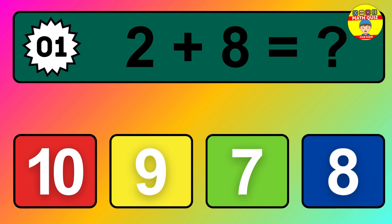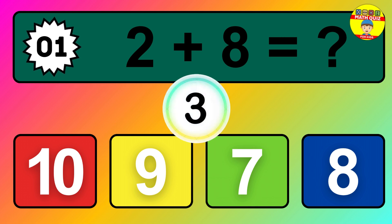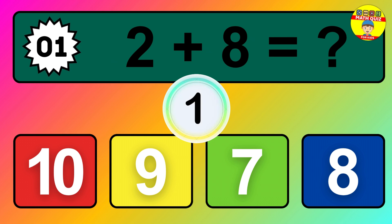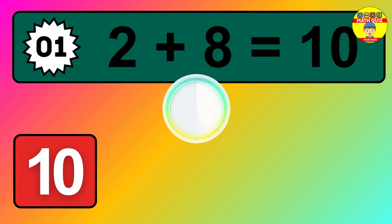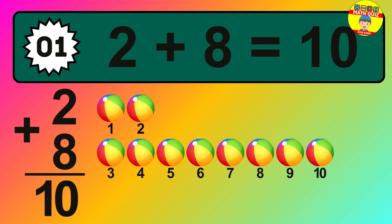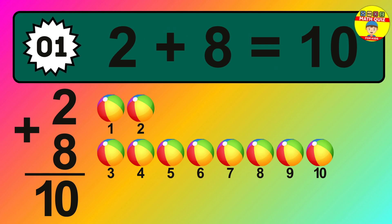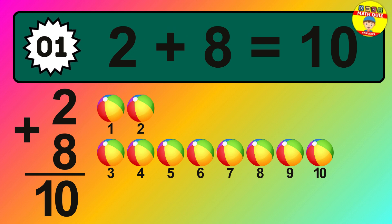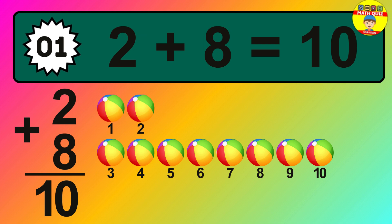Question 1. 2 plus 8 equals what? So the answer is 2 plus 8 is 10. Let's count it: 1, 2, 3, 4, 5, 6, 7, 8, 9, 10.